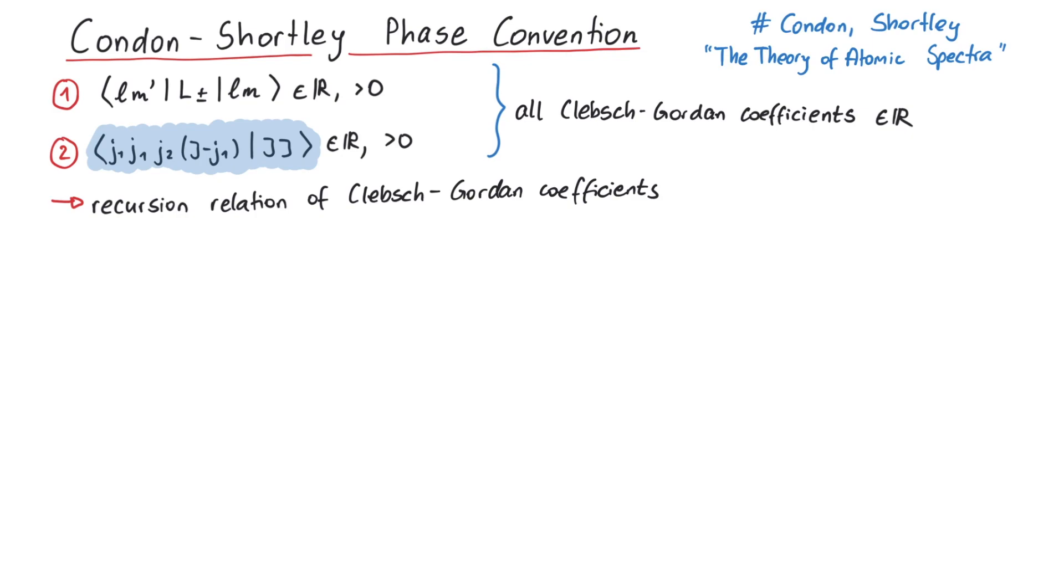To do this, we need two equations. First, the definition of Clebsch-Gordan coefficients, which we get by writing the coupled state jm in terms of product states. Note that since m2 has to be equal to uppercase m minus m1, the sum over m2 can actually already be evaluated.